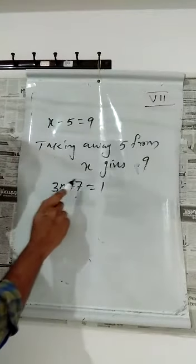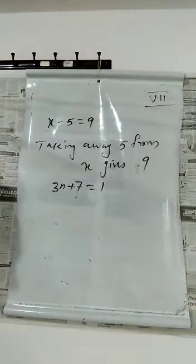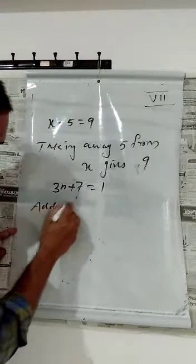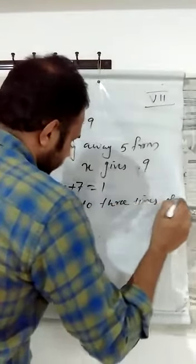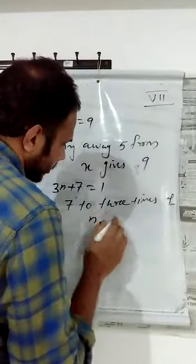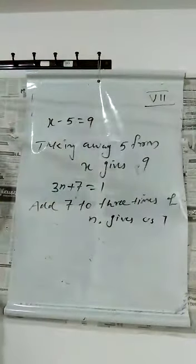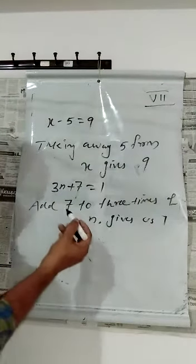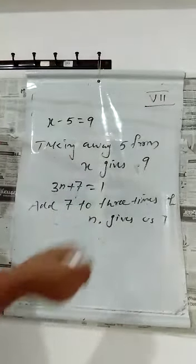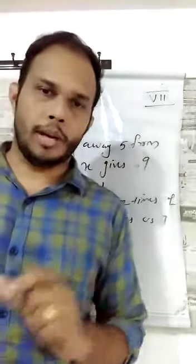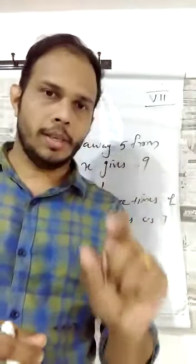Add 7 to 3 times of n — the result is 1. You can write the statement: add 7 to 3 times of n, gives us 1. This is the method of writing a mathematical equation into a statement.